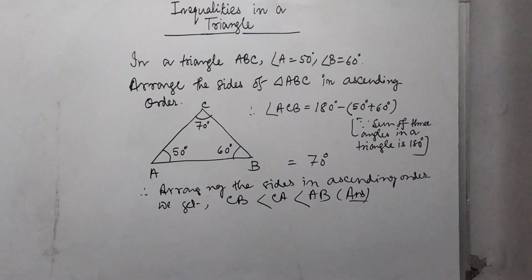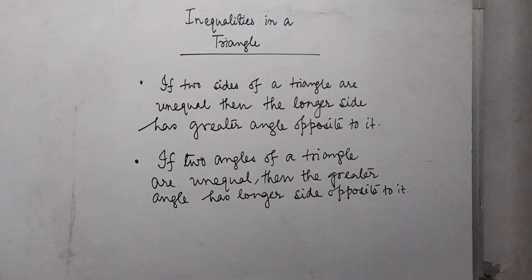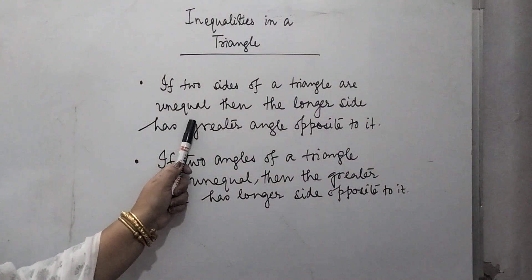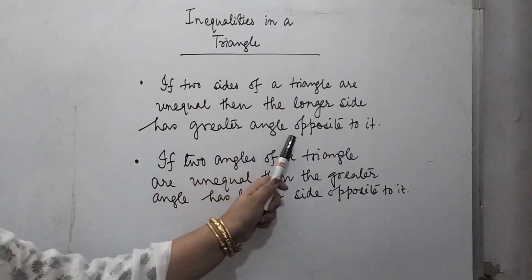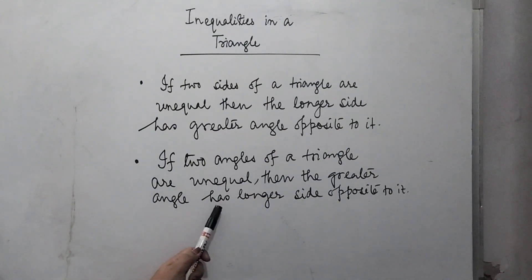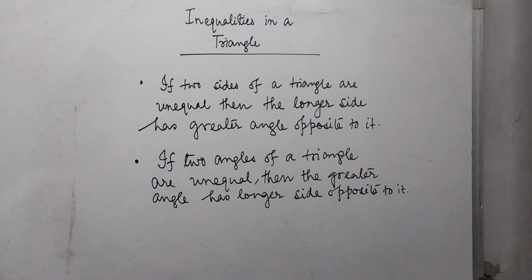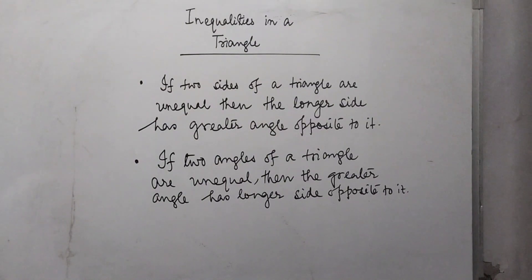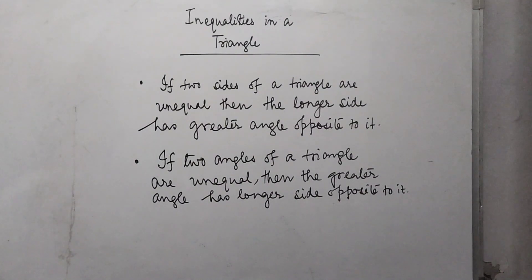In this video, we have learned that if two sides of a triangle are unequal, then the longer side has a greater angle opposite to it. And if two angles of a triangle are unequal, then the greater angle has a longer side opposite to it — the converse is also true. We also saw how to apply this knowledge for solving problems and proving other statements. In my next video, I will discuss other important theorems along with their proofs. Till then, take care, stay safe. Thank you.